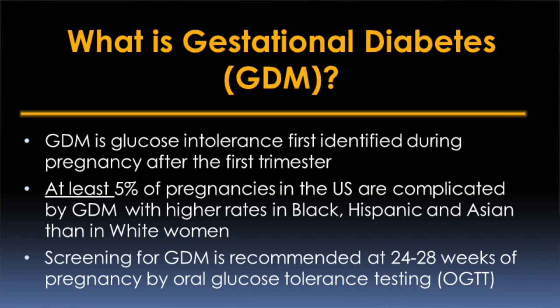GDM stands for gestational diabetes mellitus. It's a type of diabetes that occurs only in pregnancy — it comes on in the second half of pregnancy and goes away after delivery. The rates of gestational diabetes are actually increasing in the United States. It's thought that at least 5% of all pregnancies are complicated by gestational diabetes, and because obesity rates are increasing, some populations have gestational diabetes rates as high as 10-20% of all pregnancies.